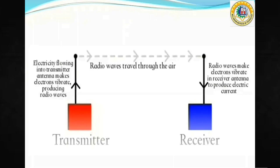In this figure, we can observe a transmitter and a receiver. The electricity flowing into the transmitter antenna makes the electrons vibrate, producing radio waves. These radio waves make the electrons vibrate in the receiver antenna to produce electric current.